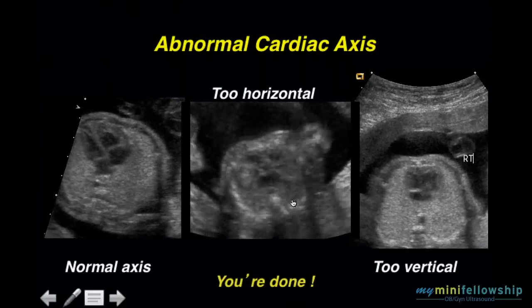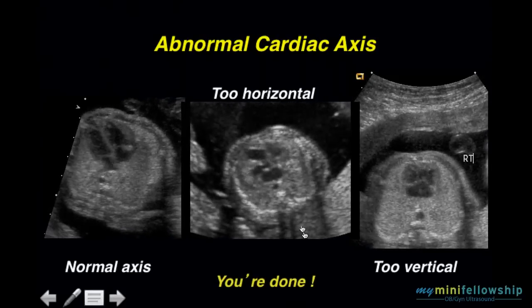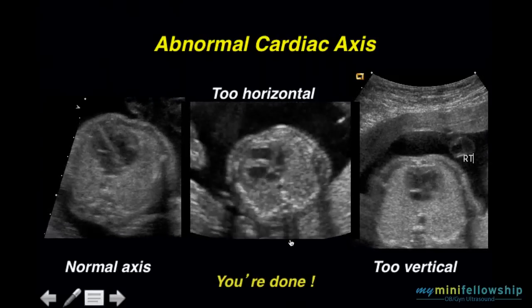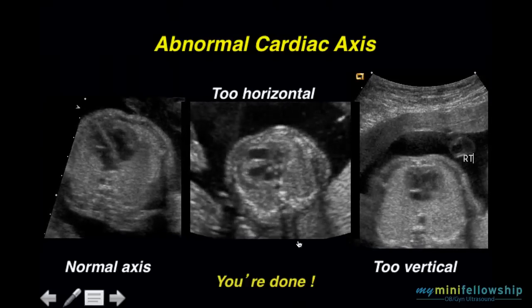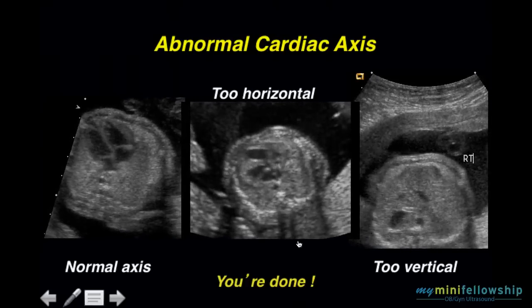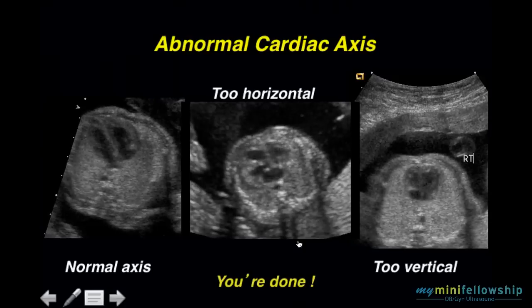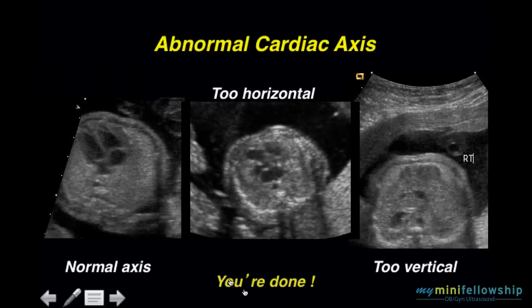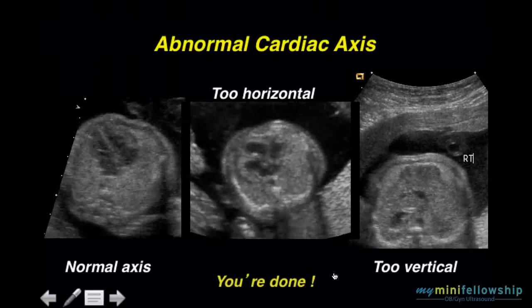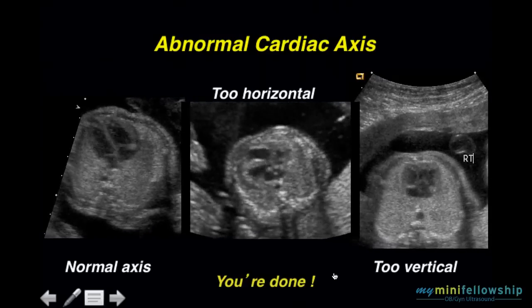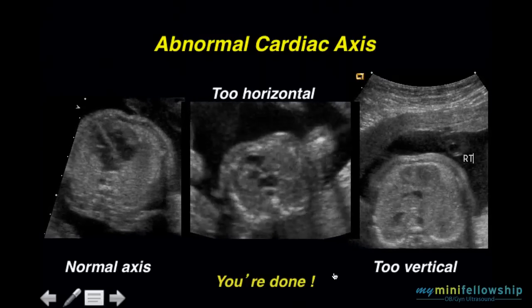But these can both be detected because the axis of the heart is abnormal. You don't have to know why the axis of the heart is abnormal. You check the axis, you don't like it — it doesn't look like it's 45 degrees. You're done. You're going to pick up the dictaphone and recommend an echocardiogram.